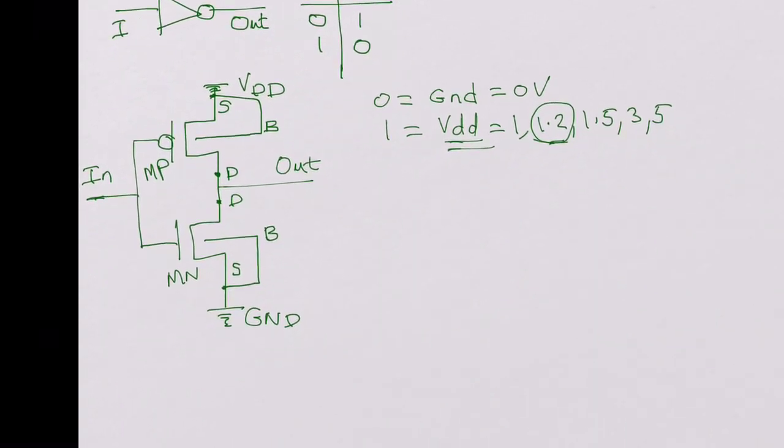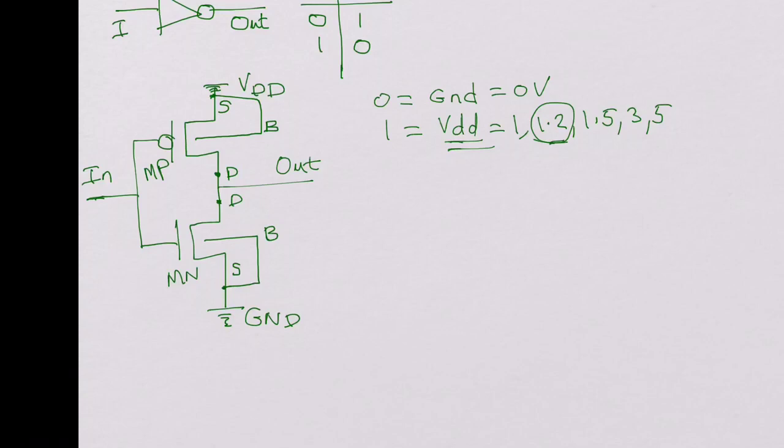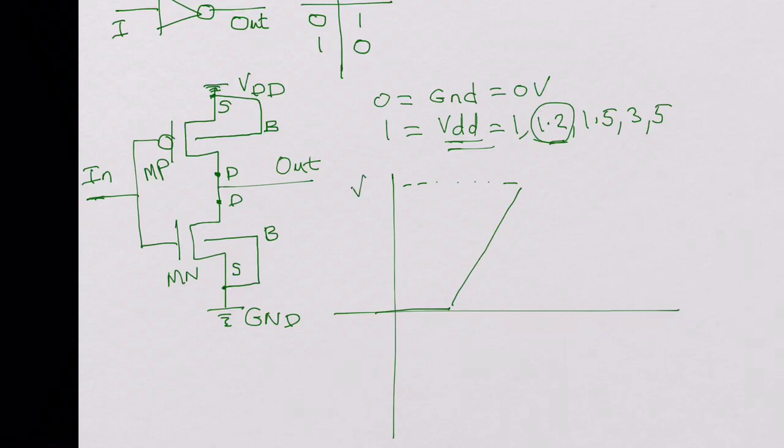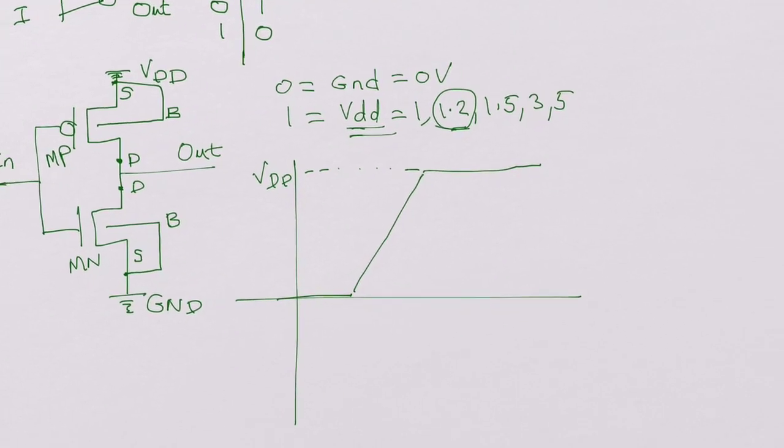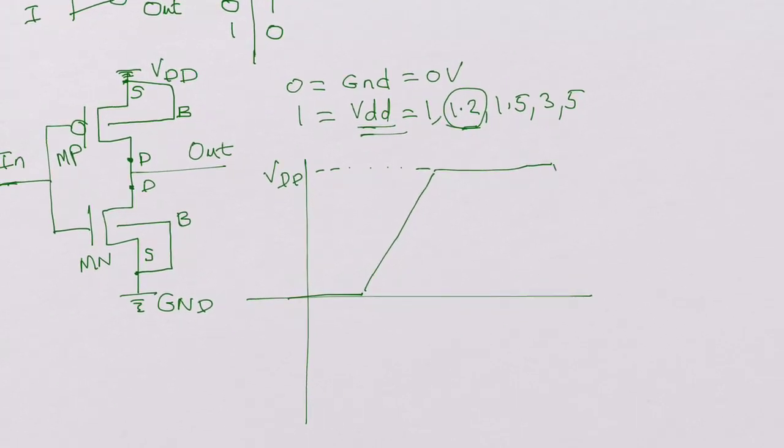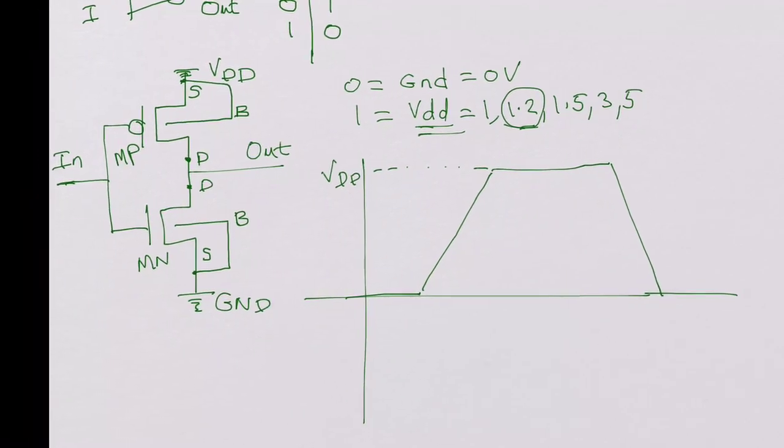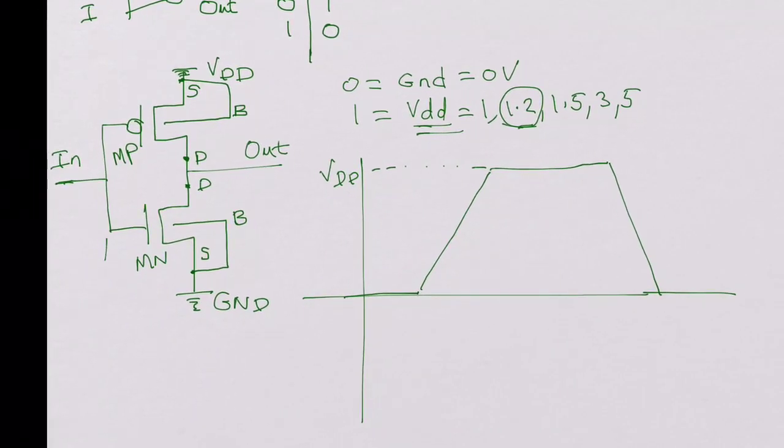And now let's look at how it works. So from a digital point of view, say we will look at input and output. Say the input is initially 0 and it goes to VDD.